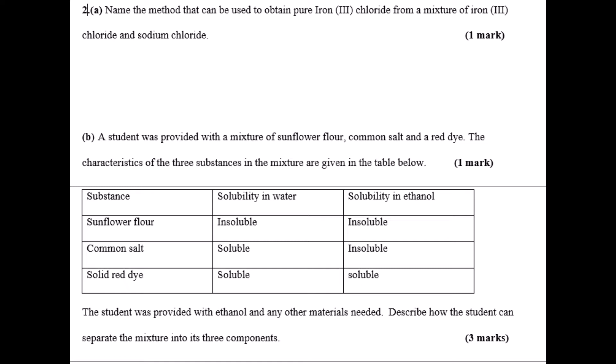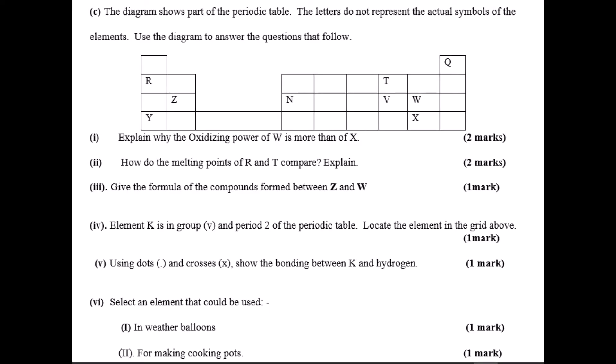You're given a table containing three substances: sunflower oil, common table salt, and red dye. The characteristics of these substances are given - solubility in water and solubility in ethanol. You are to describe a procedure that can be used to separate the three substances, and you're given ethanol and any other material that is needed.